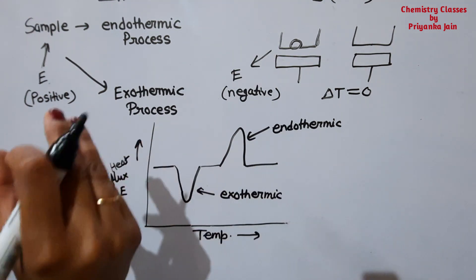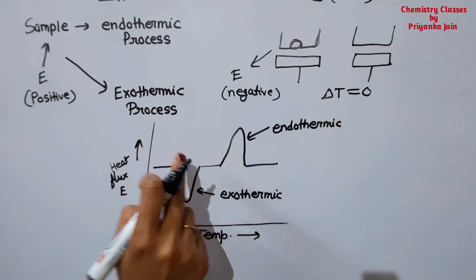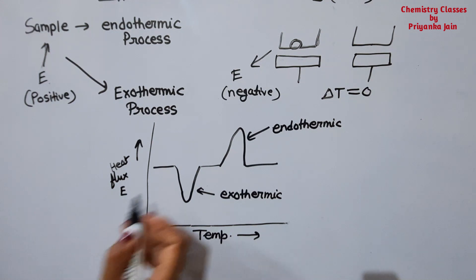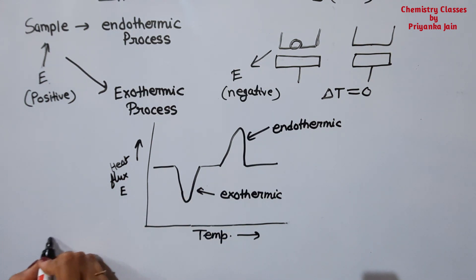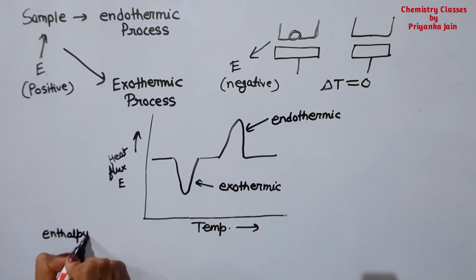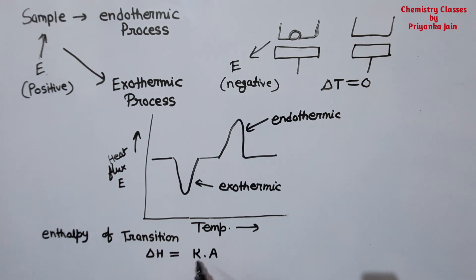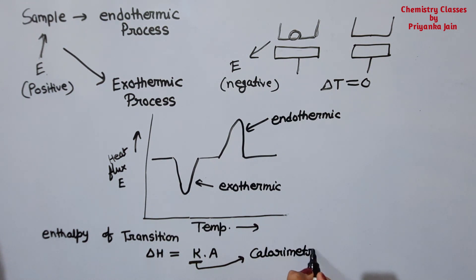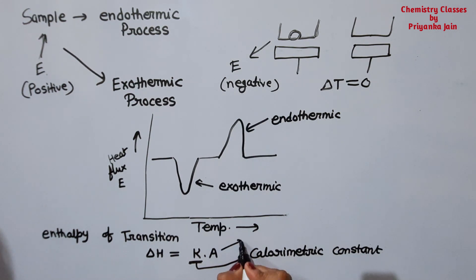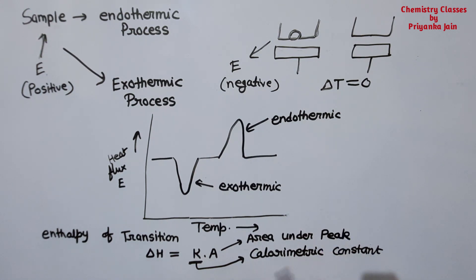By the peak area we can do the whole analysis. If we know the area of the peak we can find out the enthalpy of transition. The formula is: ΔH = k × A, where k is the calorimetric constant and A is the area under the peak. So if we know the area under the peak, we can find out the enthalpy of transition.